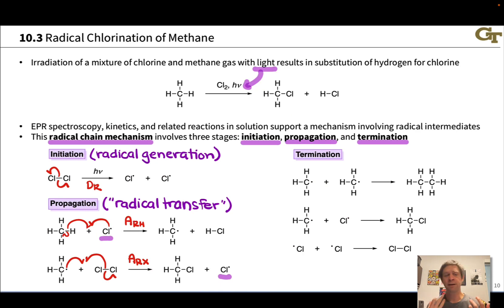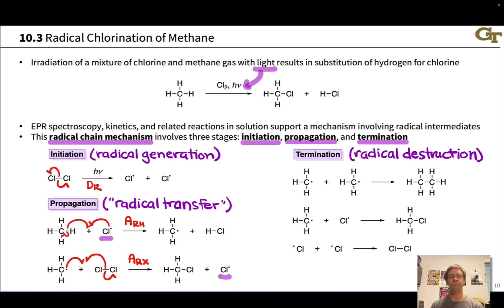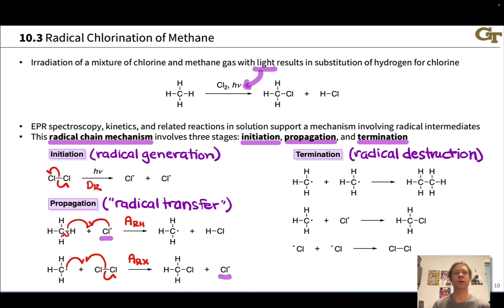In theory, it would only take one single molecule of Cl2 cleaving homolytically to generate one Cl radical, and then that radical continuously generates new Cl radicals — so it seems we need very little initiation. However, the problem is what's called termination. Termination steps are radical-radical couplings that don't generate new radicals and instead consume or destroy radicals in the reaction mixture. Because of termination, we need to use more than just one molecule of initiator — still substoichiometric quantities, but a meaningful amount. Termination steps are always radical-radical couplings and always extremely rapid.